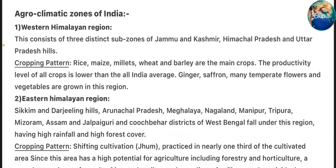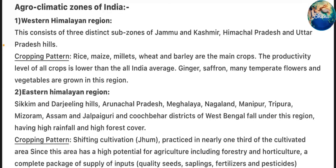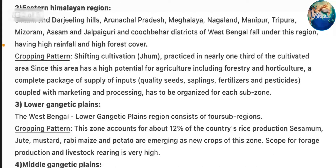Zone 1 – Western Himalayan Region: This consists of three sub-zones of Jammu and Kashmir, Himachal Pradesh, and Uttar Pradesh hills. Cropping pattern: rice, maize, millet, wheat, and barley are the main crops. The productivity level of all crops is lower than the all-India average. Ginger, saffron, and many temperate flowers and vegetables are grown in this region.